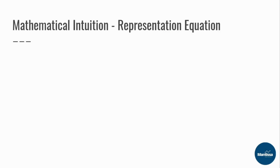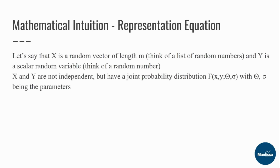For the mathematical intuition, we will first look at the representation equation. Let's say x is a random vector of length n — think of a list of random numbers — and y is a scalar random variable, think of a single random number. Visualize a list of random numbers on the left side of your head, and a single number on the right side — that is y. That is what I mean when I say x is a random vector and y is a scalar random variable.